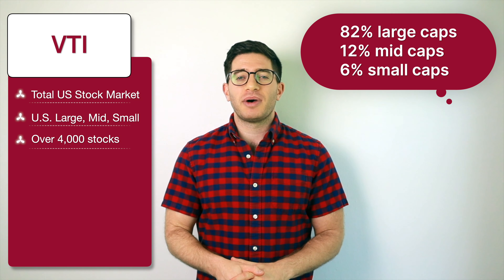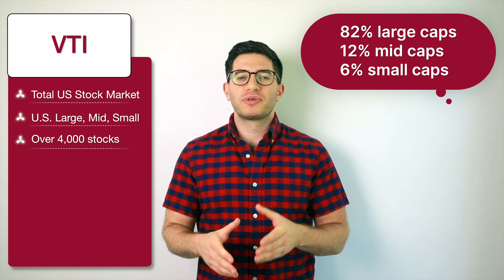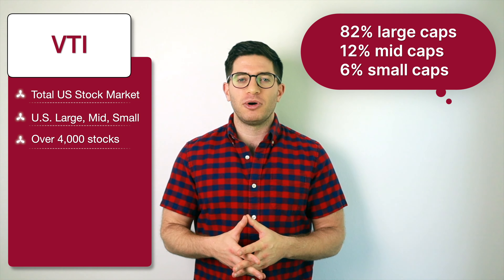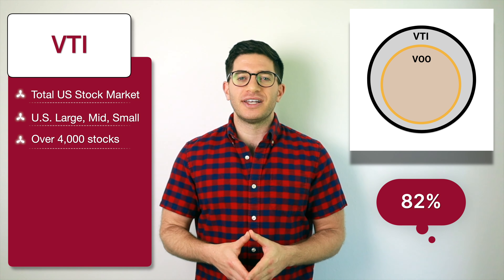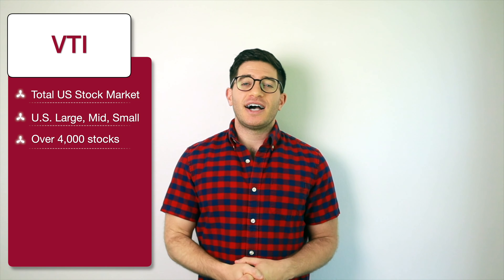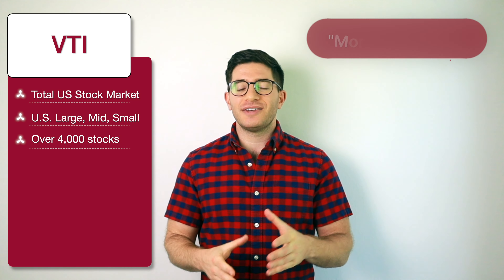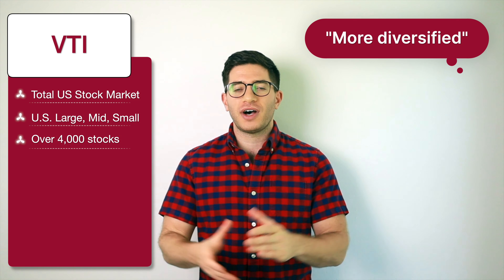VTI is the Vanguard Total Stock Market ETF, established in 2001. VTI provides similar broad exposure to the US stock market, but also includes small and mid cap stocks. Specifically, VTI is about 82% large caps, 12% mid caps, and 6% small caps. Put another way, VOO comprises roughly 82% of VTI by weight. VTI seeks to track the CRSP US Total Market Index and has over 4,000 holdings, making it more diversified than VOO.